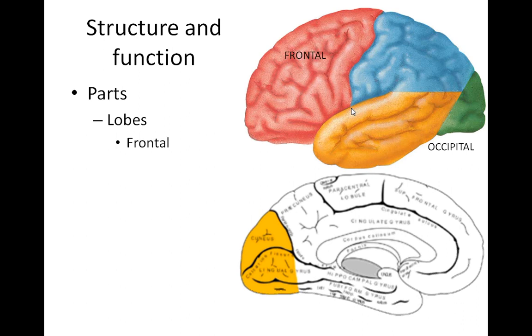The next lobe that we've got is the parietal lobe, and the parietal lobe lies behind the central sulcus and above the lateral sulcus.